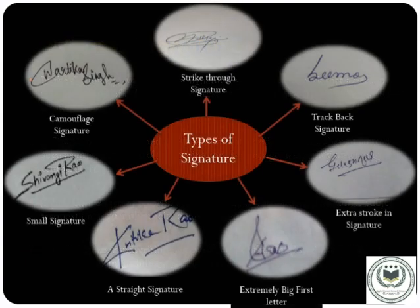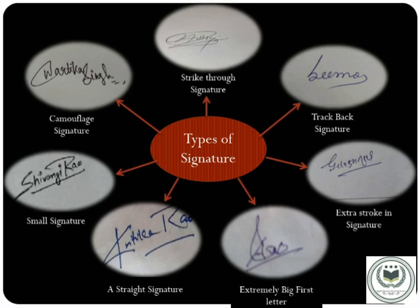There are several types of signature. First is the strike-through signature, in which the first letter has a stroke. Second, the track-back signature, in which the last letter has a track-back movement. Third, extra stroke in signature, where each letter has a special stroke. Fourth, extremely big first letter, where the first letter size is extremely big compared to other letters. Fifth, a straight signature with a straight movement. Sixth, a small signature where the whole signature size is very small. Seventh, camouflage signature — also known as illegible signature — in which attention-seeking strokes are made; the person simply camouflages the signature by circling the initial letters.